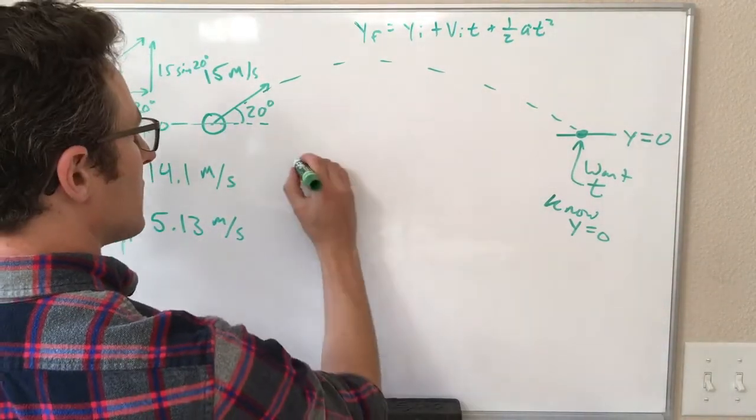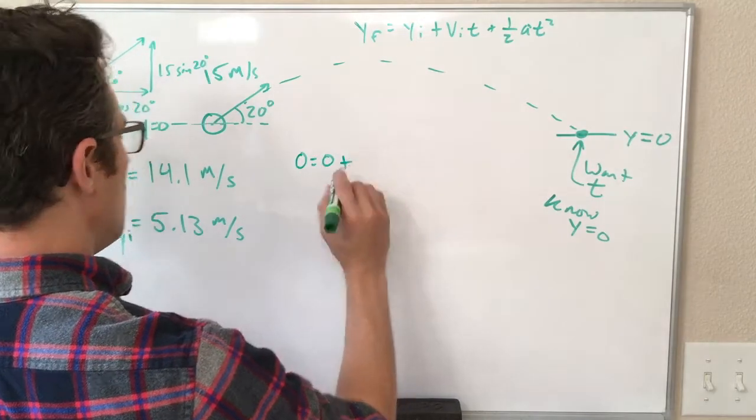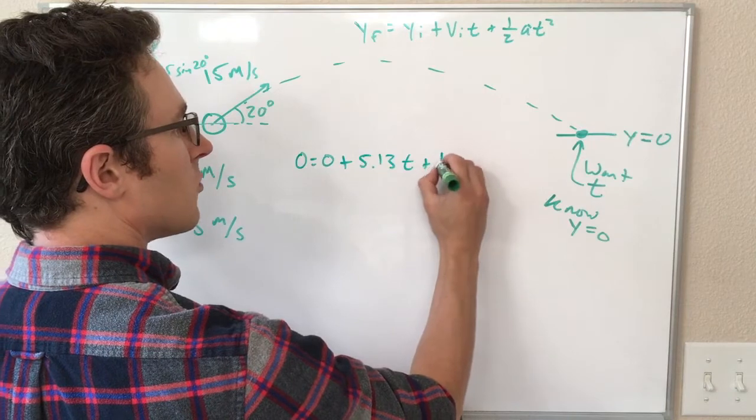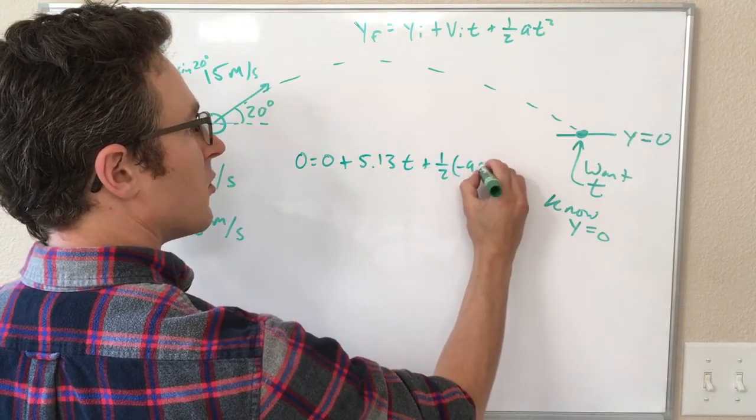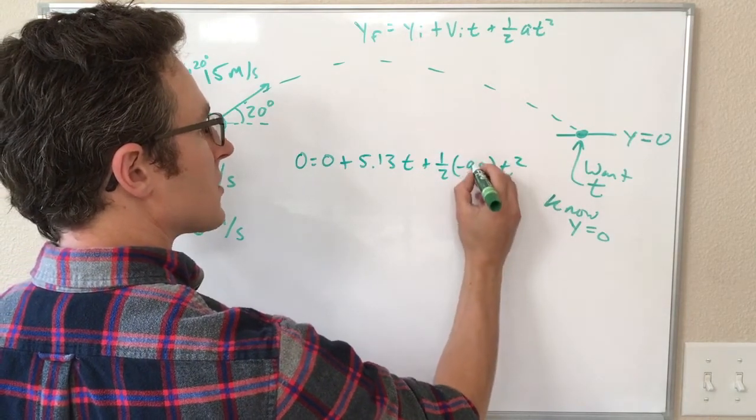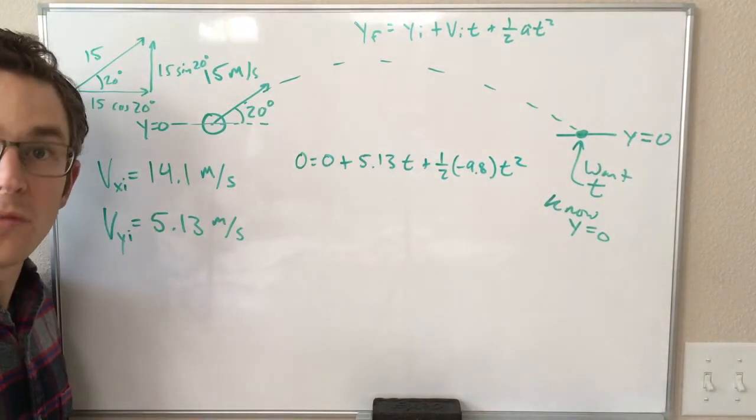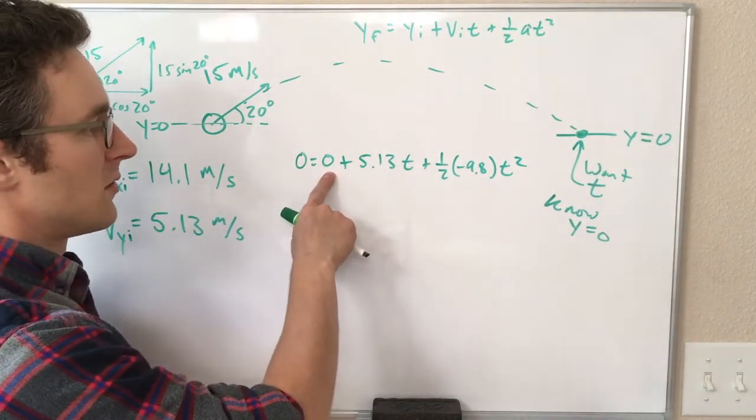So plugging those in, that looks like zero equals zero plus 5.13t plus one-half times minus 9.8t squared. It kind of looks like we might need to do the quadratic equation, but we do not because this term is zero, which means there's an easy solution.